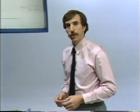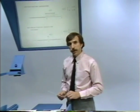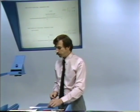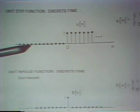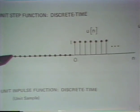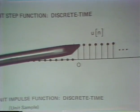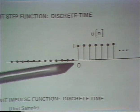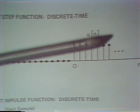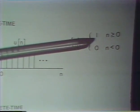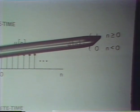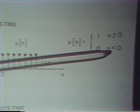Let's begin with discrete time and the discrete time unit step and unit impulse. The discrete time unit step is a sequence which is 0 for negative values of its argument and equal to 1 for positive values of its argument and 0. So mathematically, the unit step sequence is 1 for n greater than or equal to 0, and 0 for n less than 0.